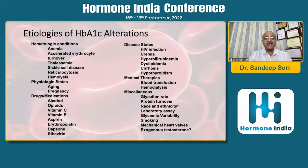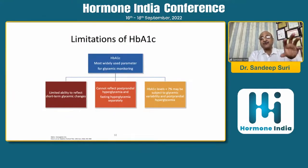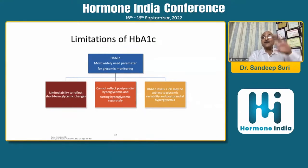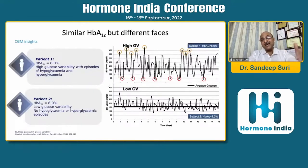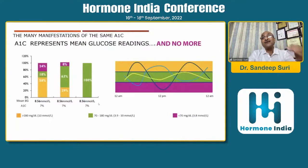Limitations of HbA1c include: limited ability to reflect short-term glycemic changes; it is a mean plasma glucose reflecting long-term chronic hyperglycemia over 90 to 120 days; it cannot separately reflect postprandial and fasting hyperglycemia. HbA1c less than 7% may still be subject to glycemic variability and postprandial hyperglycemia. Two patients with similar HbA1c can have very different glycemic variability - HbA1c only tells you the mean plasma glucose and cannot address hypoglycemia or glycemic variability.